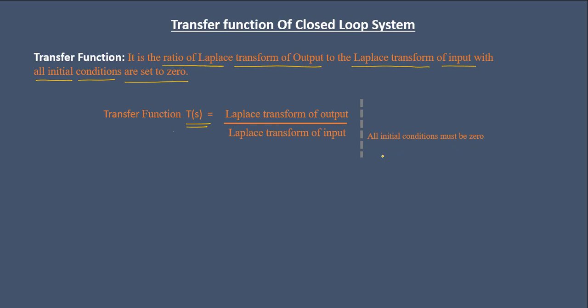Our next chapter, chapter number two, will be on transfer functions, where we will discuss transfer functions in great detail. In that chapter you will understand the constraint which says all initial conditions must be zero.